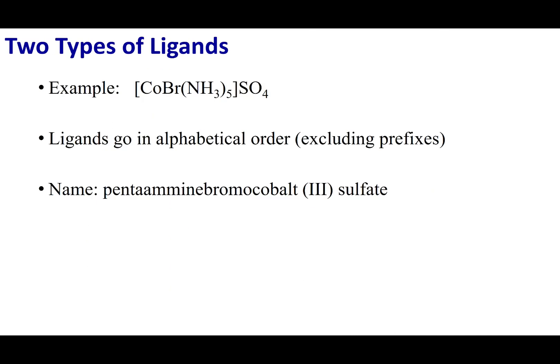If you have more than one ligand type — for example, bromo ligands and amine ligands — you list the ligands in alphabetical order, not counting the prefix. Amine starts with AM, bromo starts with B, so amine comes before bromo. Then designate how many of each ligand you have by putting the appropriate prefix on each.